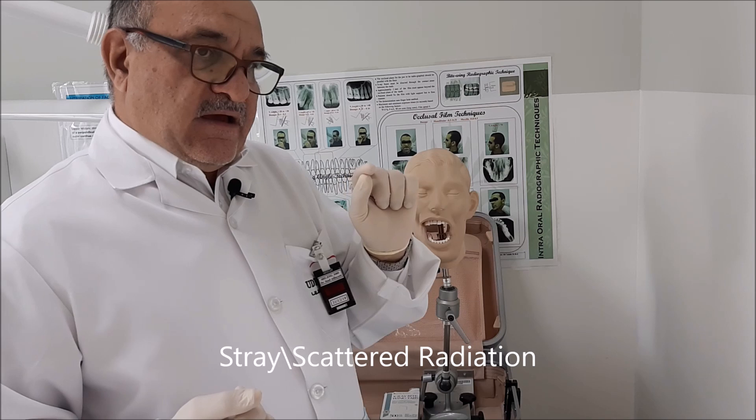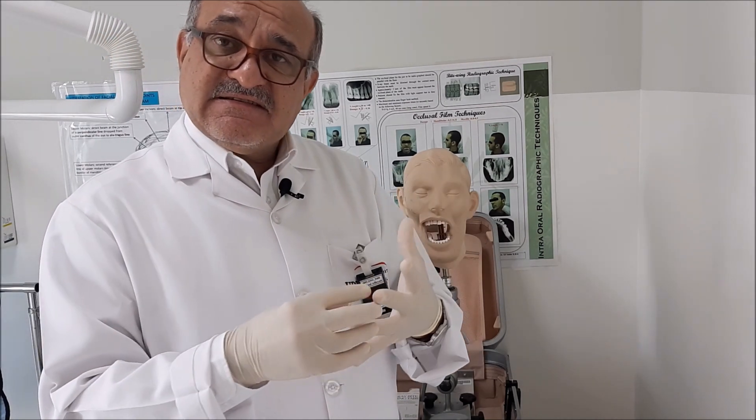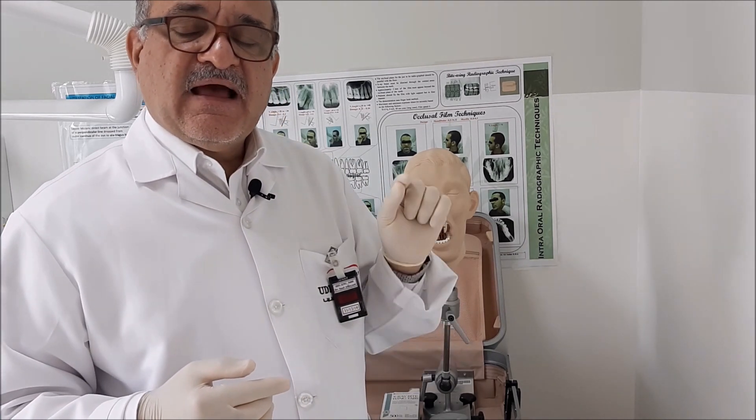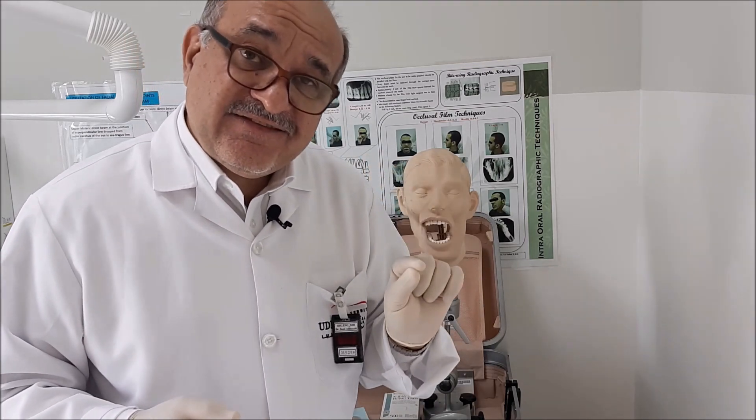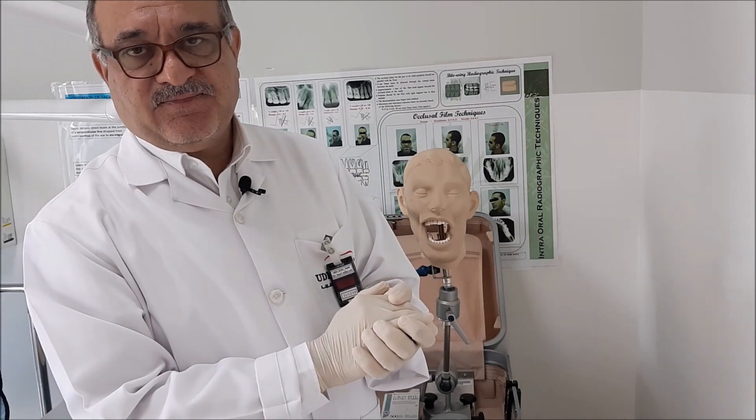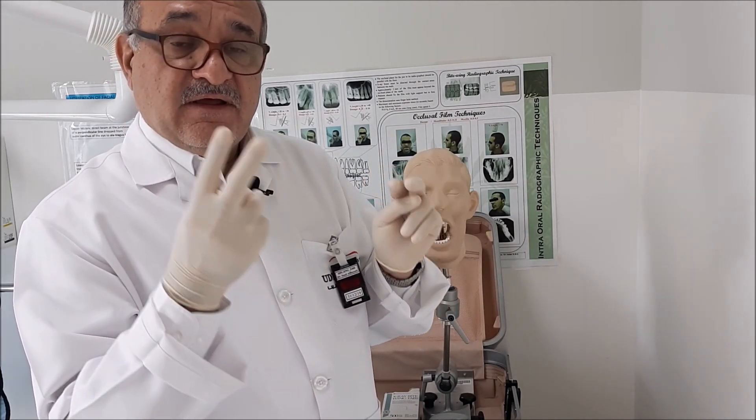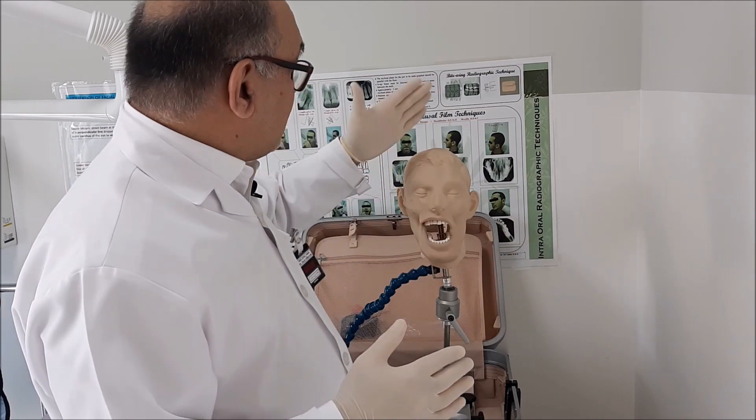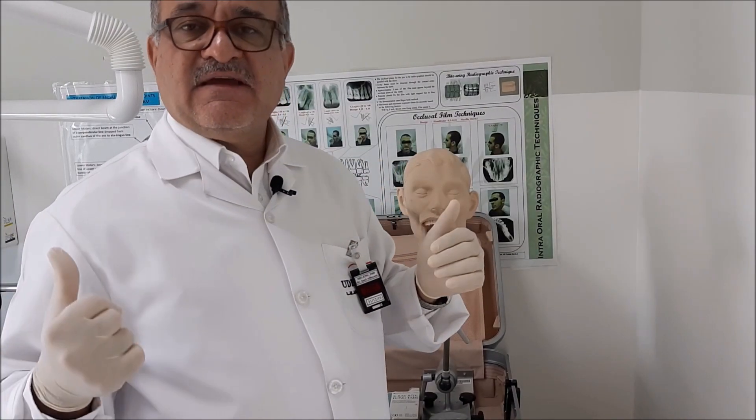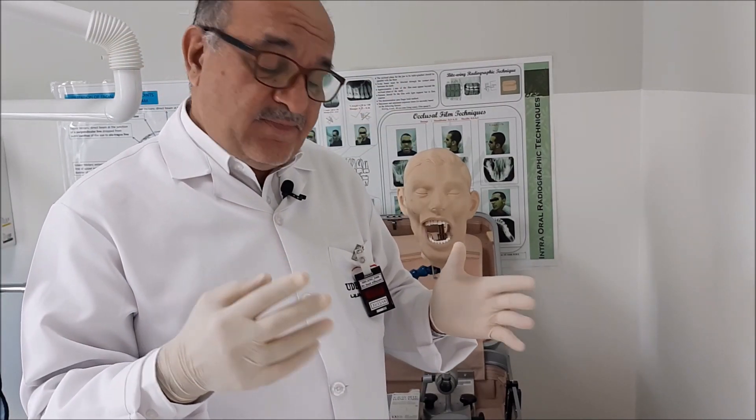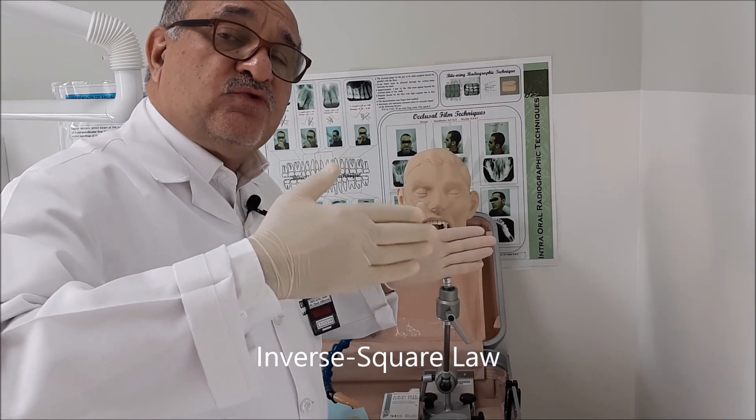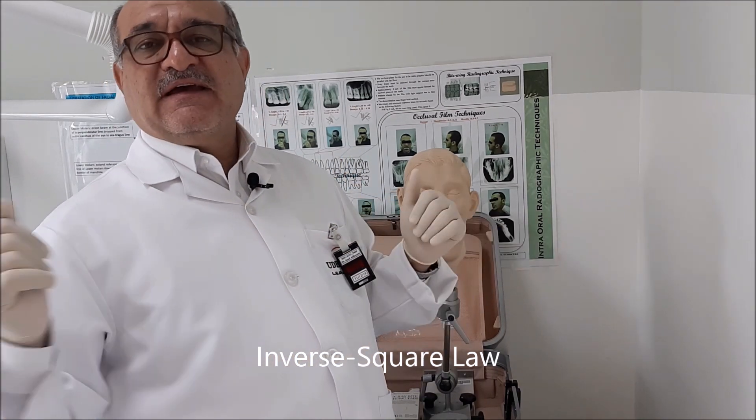So we should keep distance between us as a dentist and the patient's head, and this distance is at least two meters in a radius around the patient's head. Why two meters in particular? Because in this two meters, the scattered radiation will lose all its energy. At a distance of two meters, you will get no radiation.